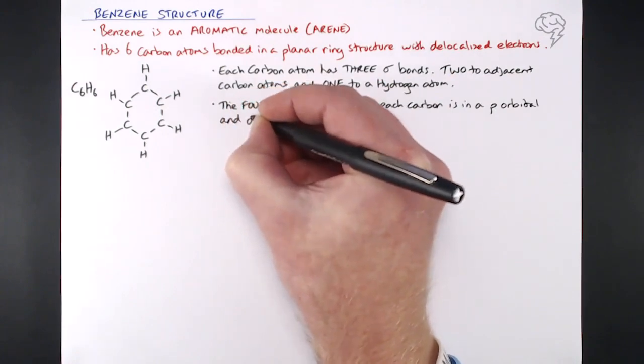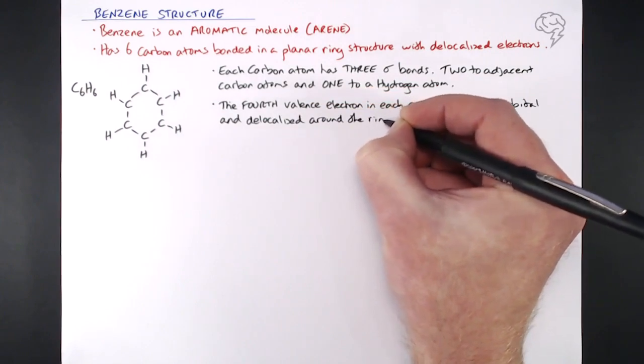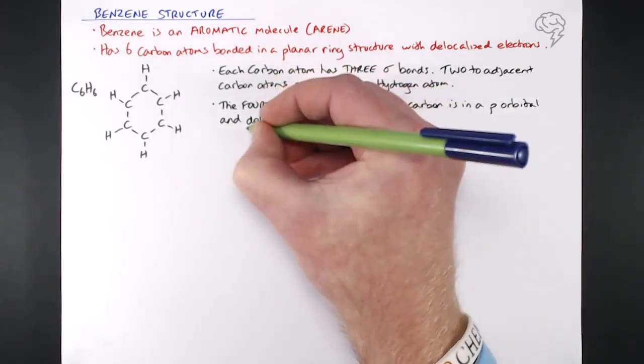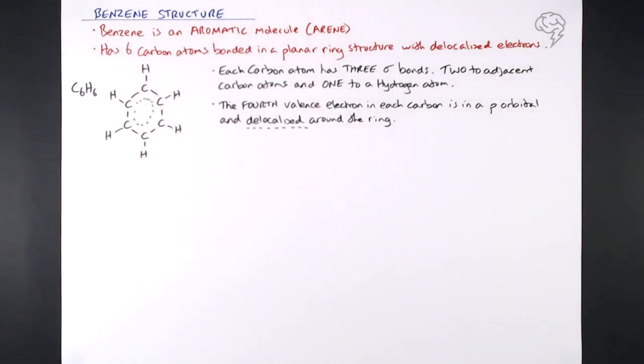Now that valence electron in that p orbital is delocalized around the ring, so each carbon atom has that spare electron in the p orbital and each of them donates an electron to this delocalized system around the ring, which I've highlighted in green here. So we do have six electrons, one from each carbon atom, just whizzing around, all with these overlapping p orbitals.